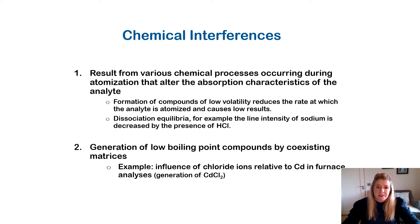Chemical interferences result from various chemical processes occurring during atomization that alter the absorption characteristics of the analyte. The formation of compounds of low volatility reduces the rate at which the analyte is atomized and causes low results.